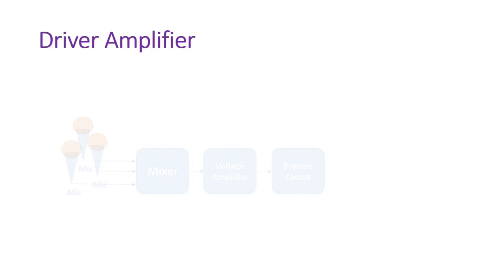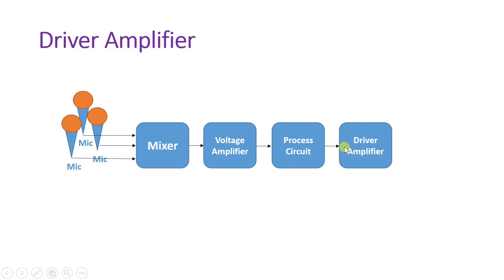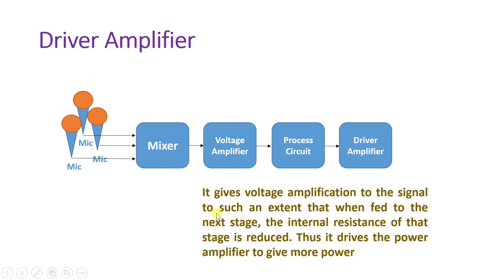After the processing circuit we use a driver amplifier. The driver amplifier is essential — it gives voltage amplification to the signal to such an extent that the internal resistance of the next stage is reduced. This reduced internal resistance allows the driver amplifier to drive the power amplifier to deliver more power. So the driver amplifier both amplifies the signal and reduces internal resistance.